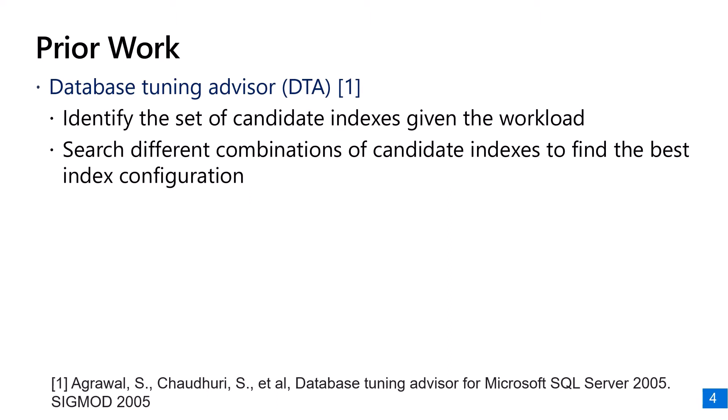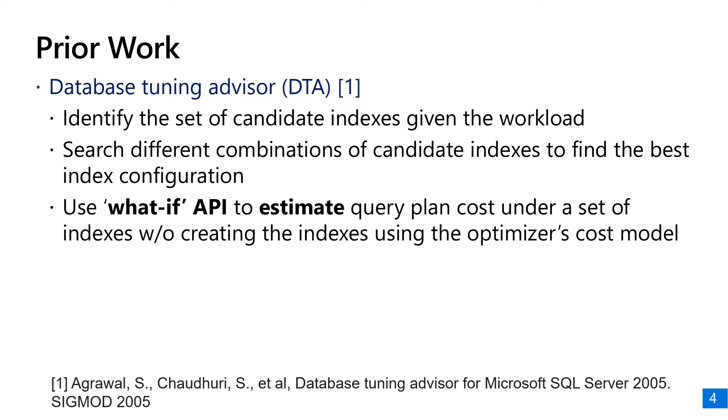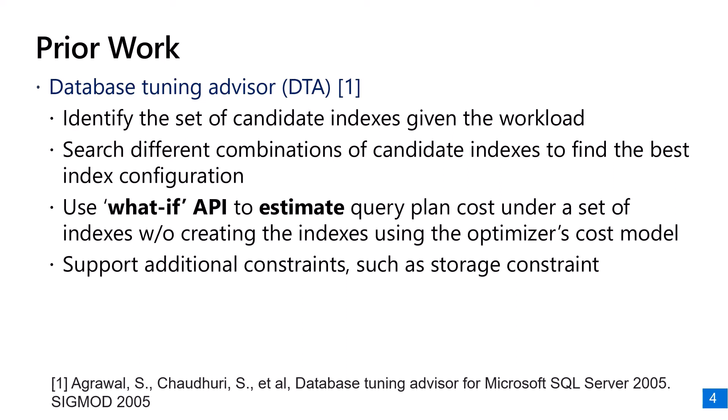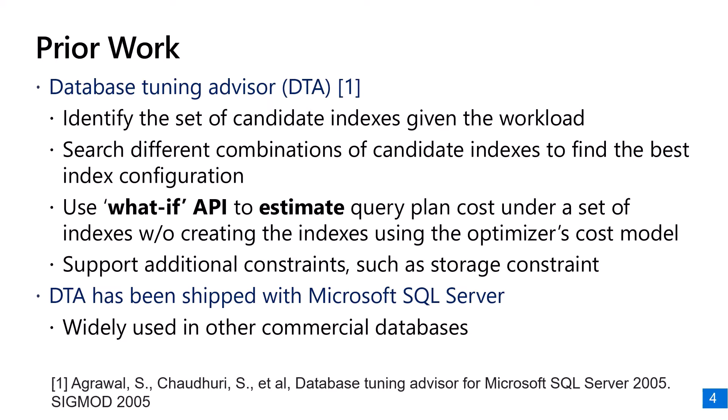To estimate the potential benefit of having a set of indices, DTA proposes a what-if API. This API estimates the cost of a query plan based on the query optimizer's cost model without implementing these indices. DTA can also support additional constraints such as a storage limit, and has been shipped with Microsoft SQL Server for more than a decade, with the technique also adopted for other commercial databases.